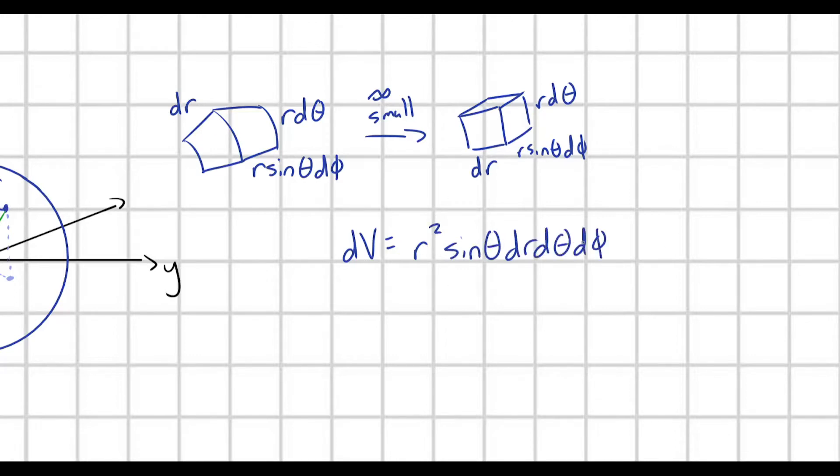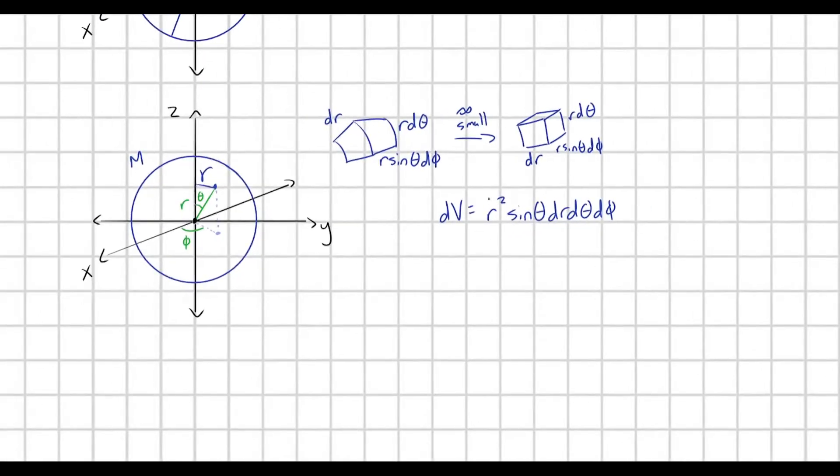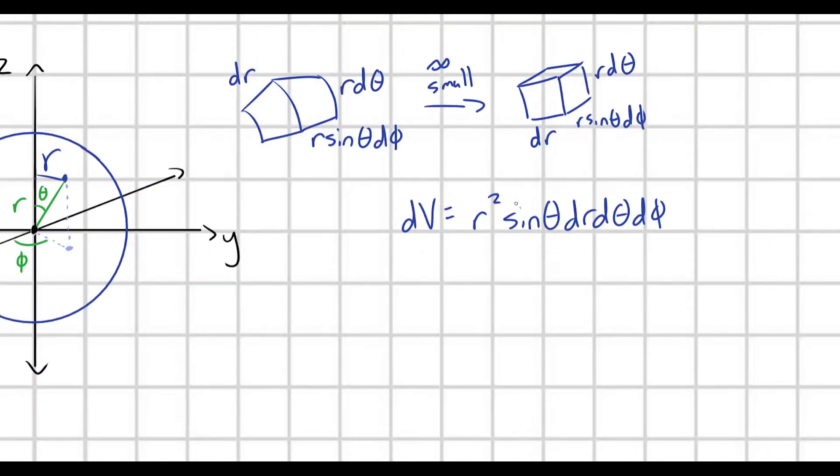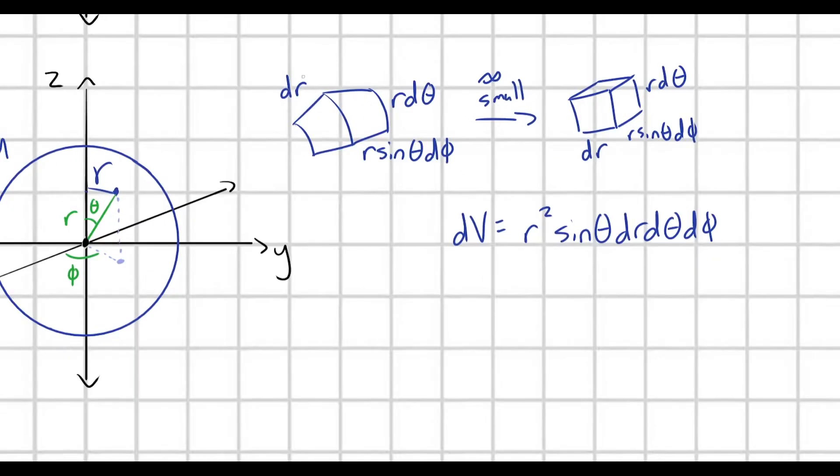And so the volume element dV is equal to r squared sine theta dr d theta d phi. And that's the general form for a volume element in spherical coordinates. I know I went through this kind of fast. There's plenty of videos and explanations online in more detail. But yeah, you just get to this by varying each of your three coordinates, keeping the other two fixed, and then building your volume element from there.